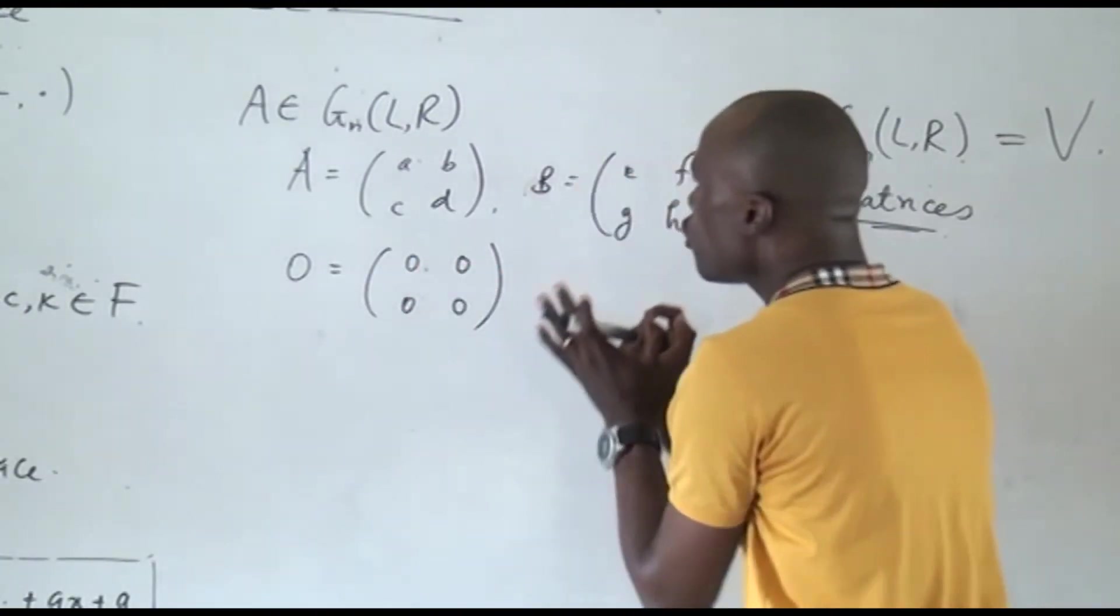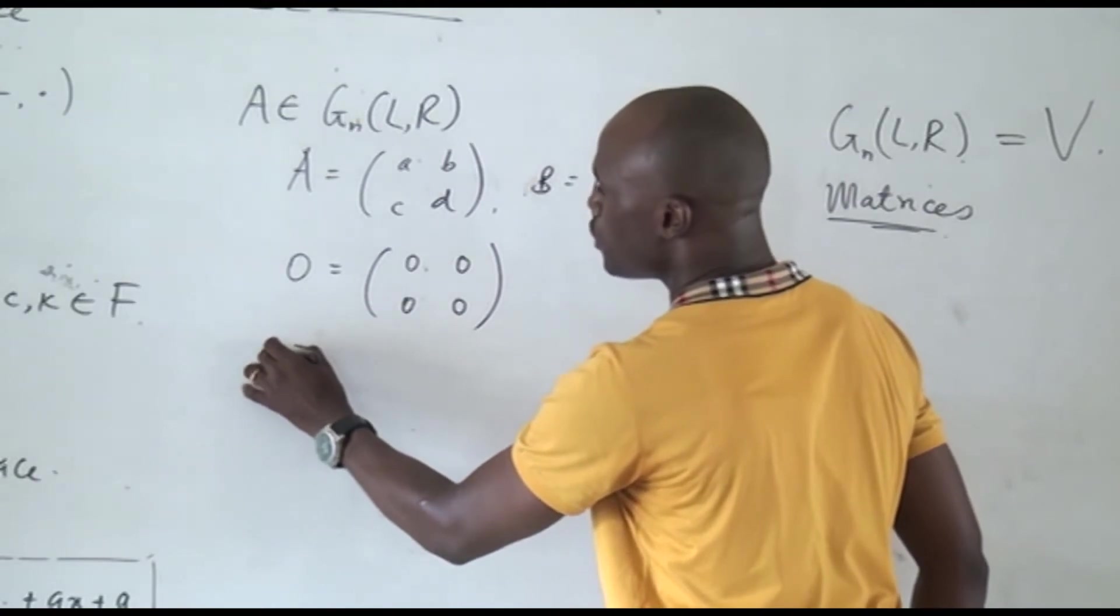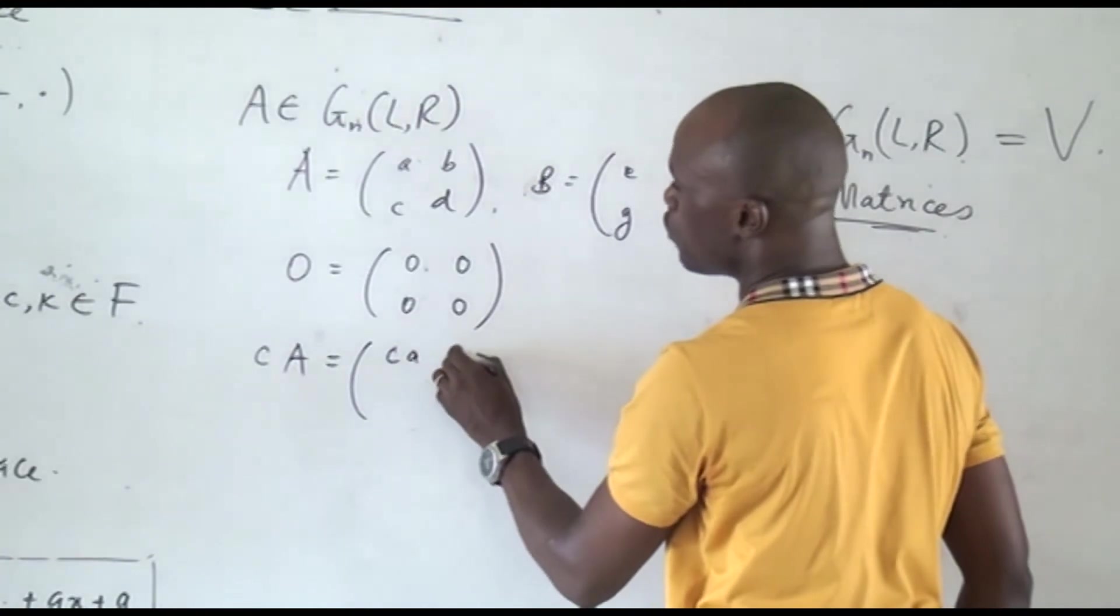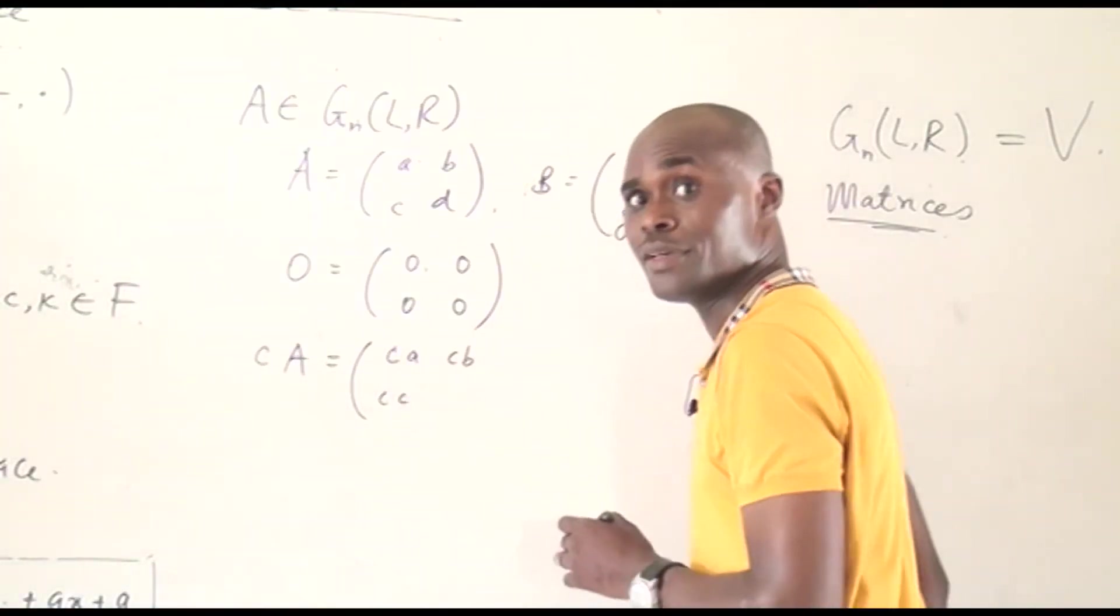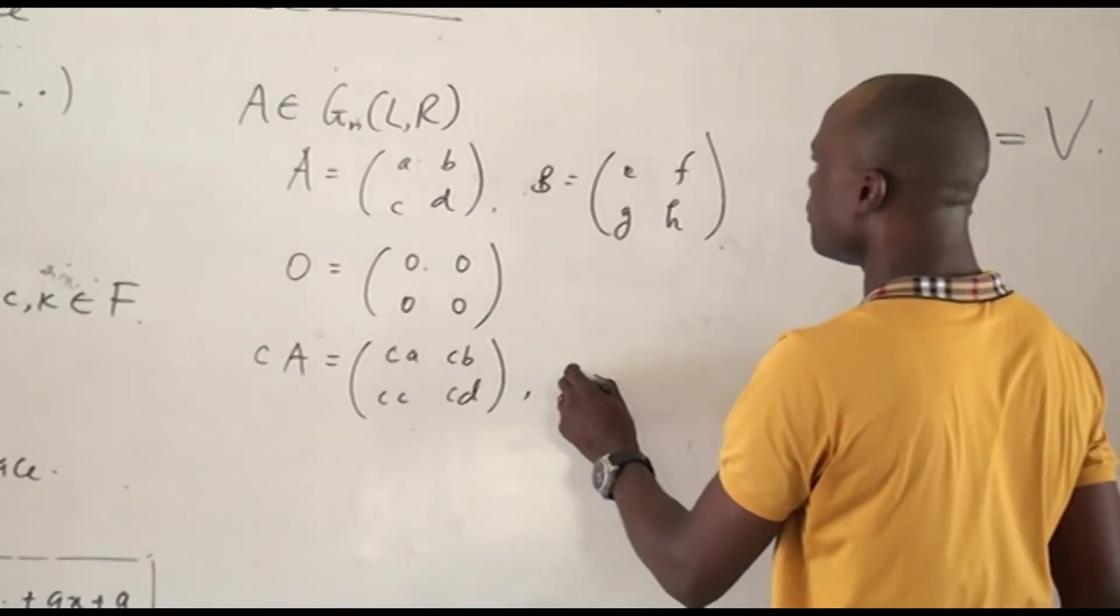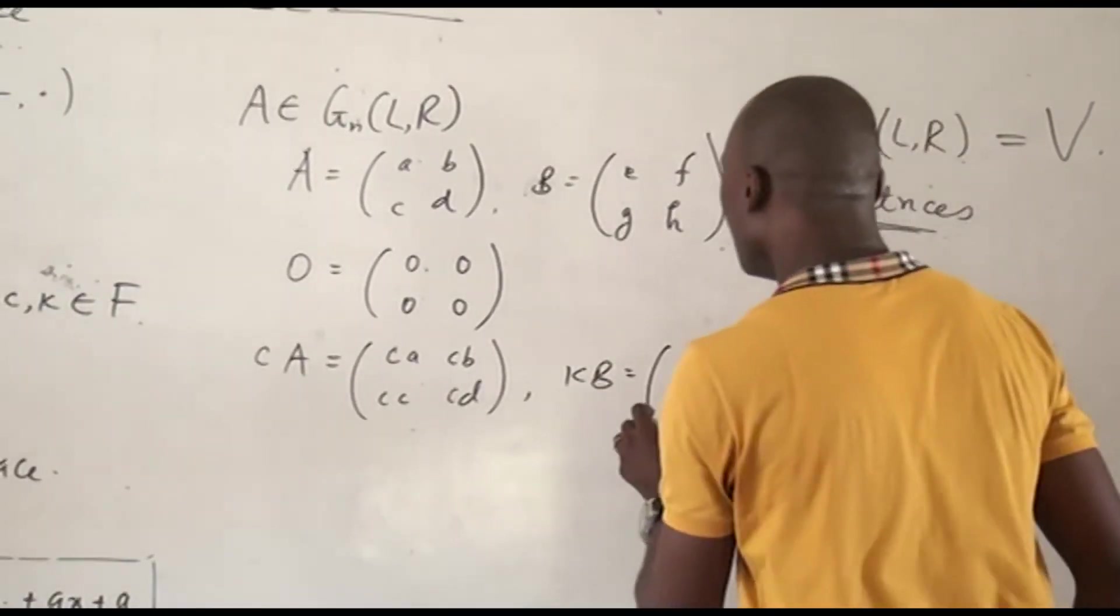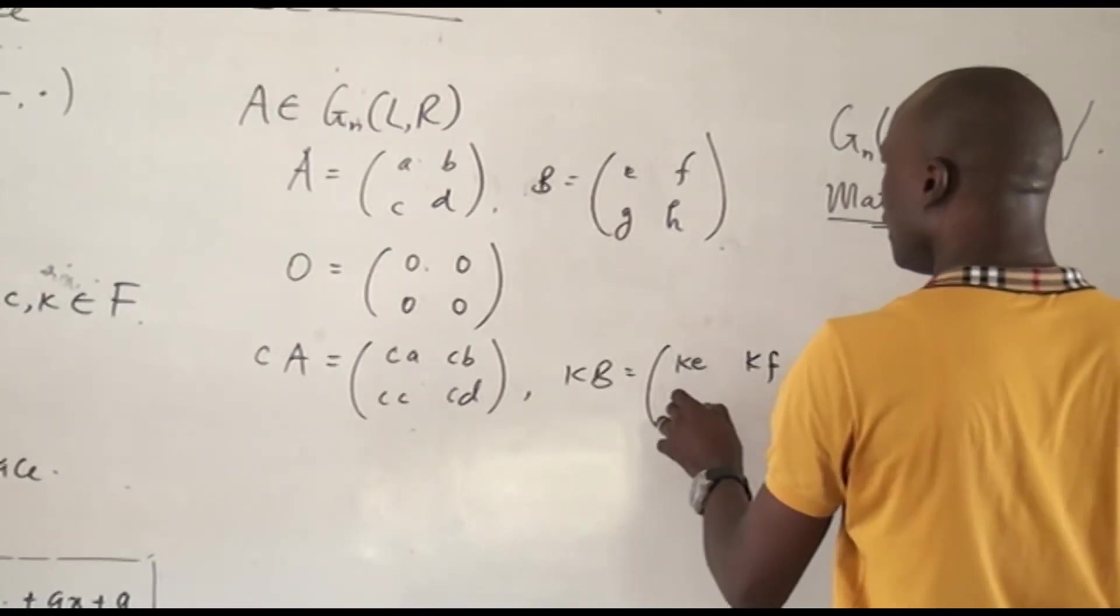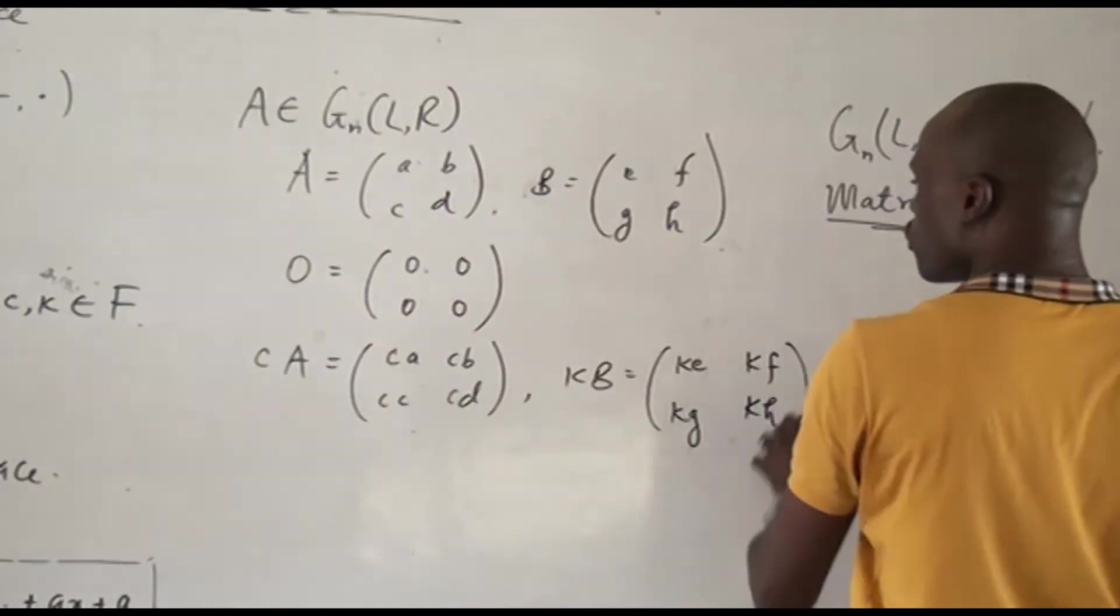Let us try something. So, let us find C times A, and C times A is going to give us (ca cb; cc cd). And K B is going to be (ke kf; kg kh).